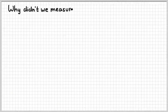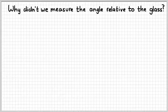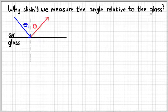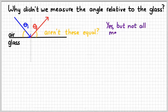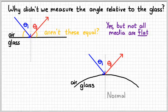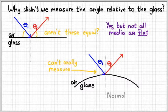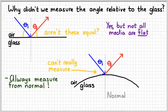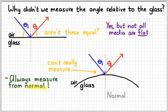You might wonder why we don't measure the angle relative to the glass surface itself — aren't those angles equal too? Yes, but we need to remember that not all media are flat. It's very common to have a curved mirror, in which case we can't measure the angle relative to the surface because the surface is curved. That's why it's important that we always measure angles for reflection — and later refraction — from the normal, because the normal is the only thing that's always going to be there.